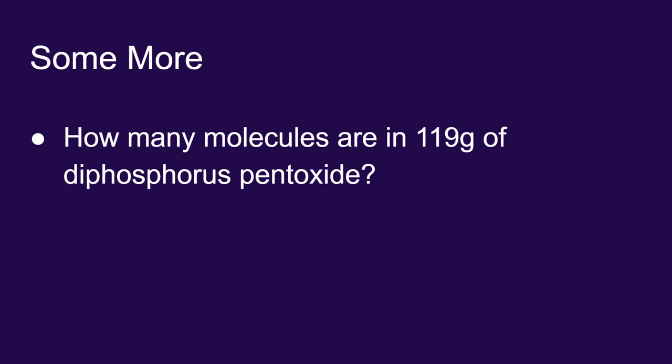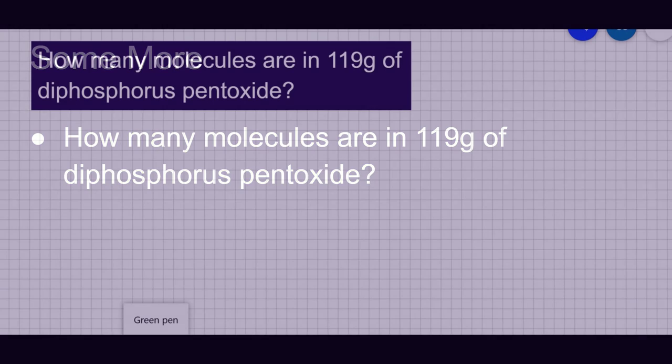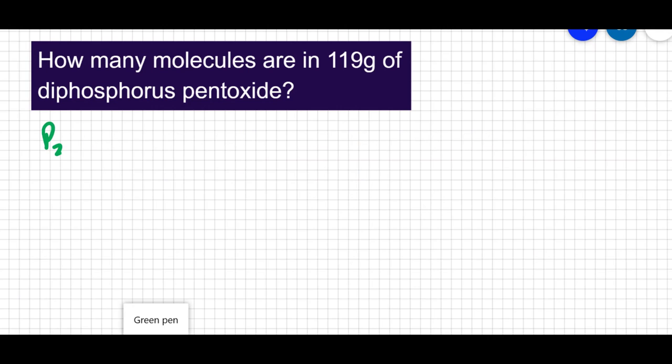So if we look at a sample of diphosphorus pentoxide in a 119 gram sample, I would like to know how many molecules are present. Diphosphorus pentoxide is P2O5 and there are a number of things we know about diphosphorus pentoxide.